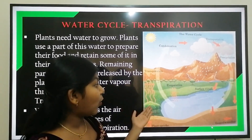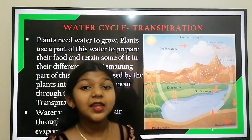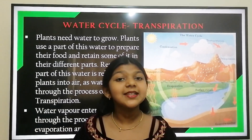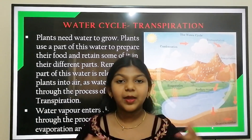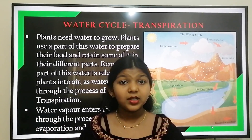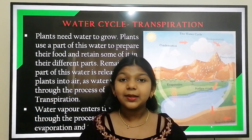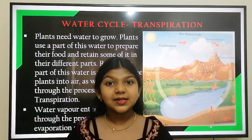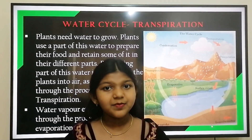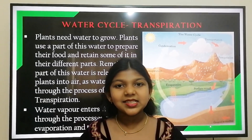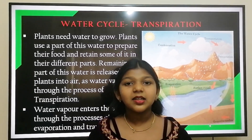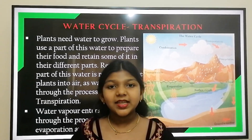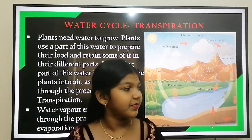Plants need water to grow. Plants use a part of this water for preparing their food and store the remaining water in different parts. This remaining water is released into the air as water vapor by the process of transpiration.